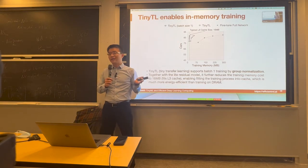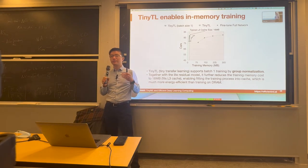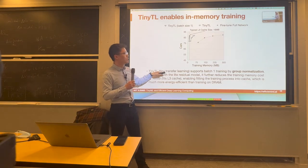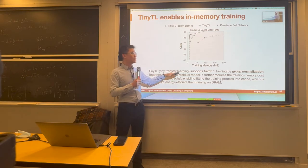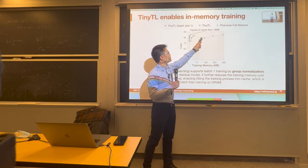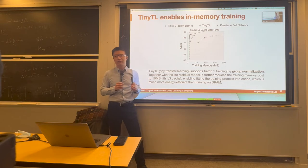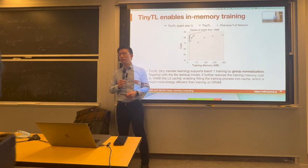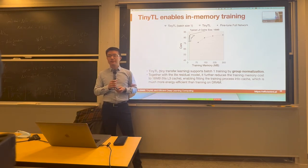Another bottleneck is batch size. We usually require a larger batch size — like 8 or 16 — to ensure the model converges. But we find we can use group normalization during training so the model can converge even with batch size of 1. That further reduces memory from 300 megabytes to within 16 megabytes. 16 megabytes makes it easy to fit in L3 cache or SRAM, enabling fine-tuning to fully reside locally in cache without off-chip DRAM access, drastically improving efficiency and reducing training memory.